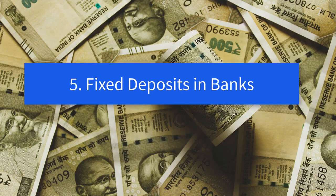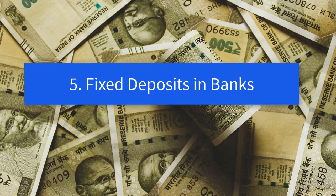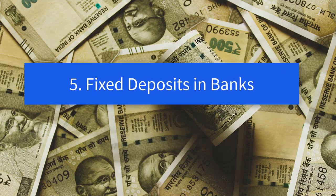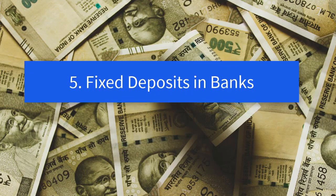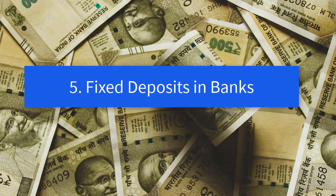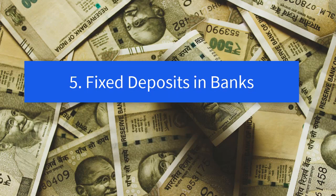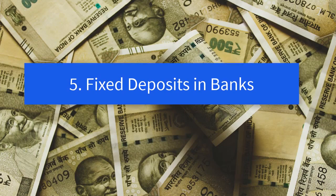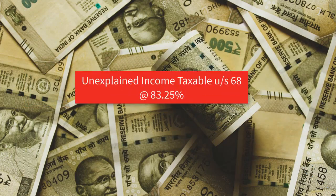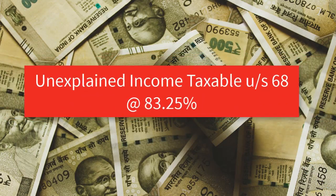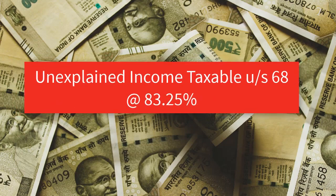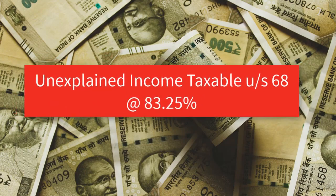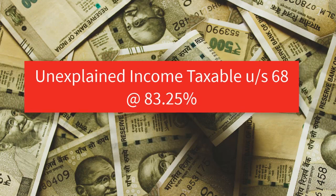In your Form 26AS, under high-value transactions, it will reflect that you have invested 10 lakhs or more in cash. Whether you bought the FD in parts totaling 10 lakhs or in one shot, you will get a notice from the income tax department asking for the source of the money. If you don't explain it, your unexplained cash credit will be taxed at 83.25% including tax and penalties.